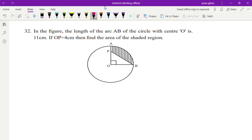This is from the 2023 model paper. 2023 model paper of Karnataka, okay? So let's begin this sum. In the figure, the length of arc AB, see this is your arc AB, correct, this is your arc AB.